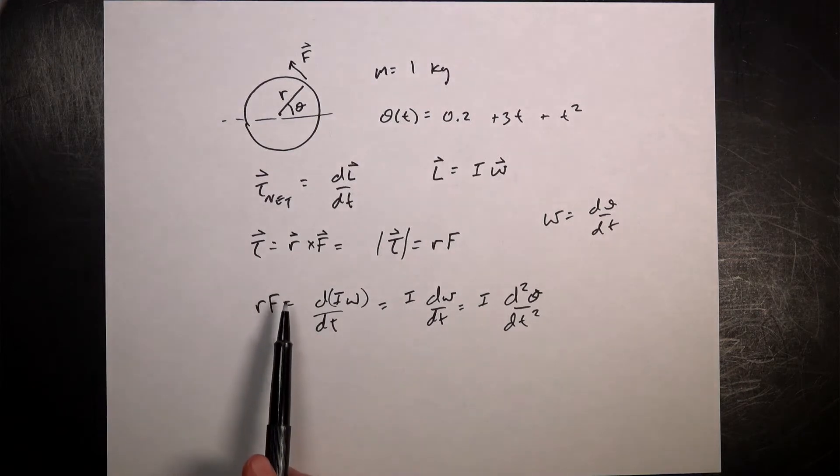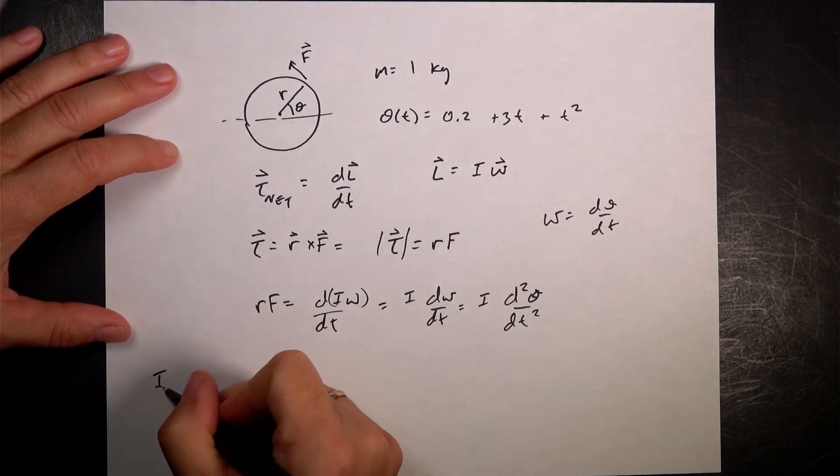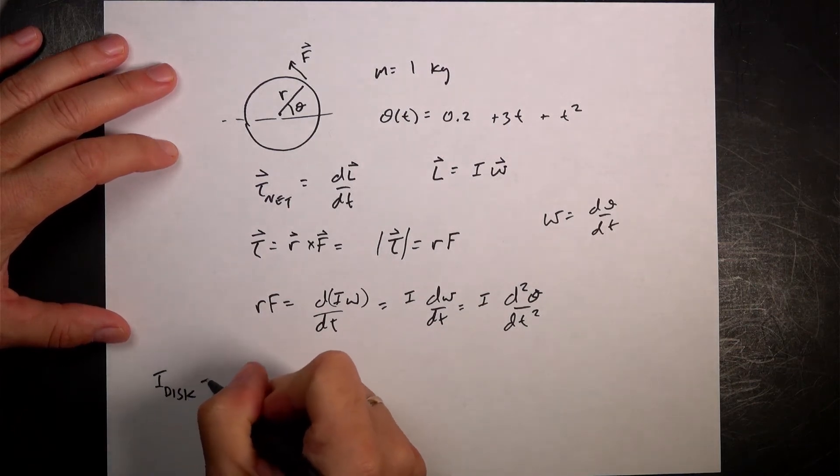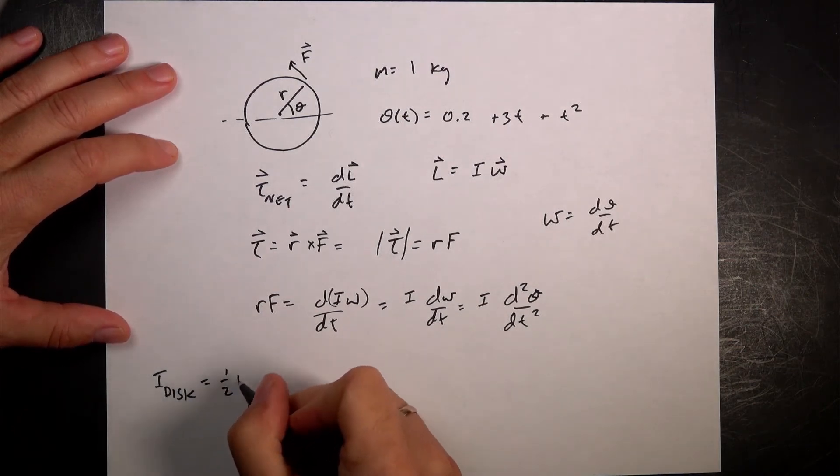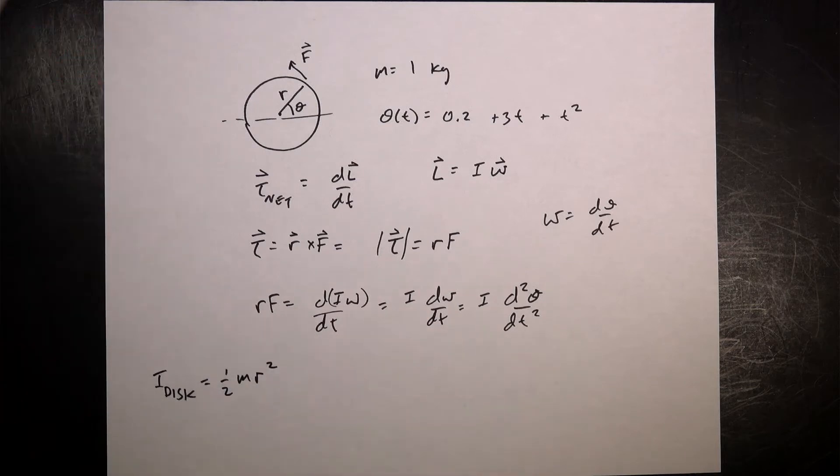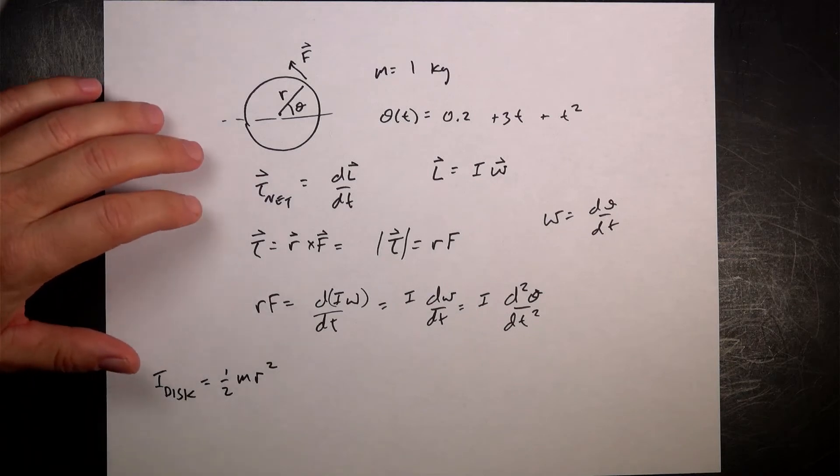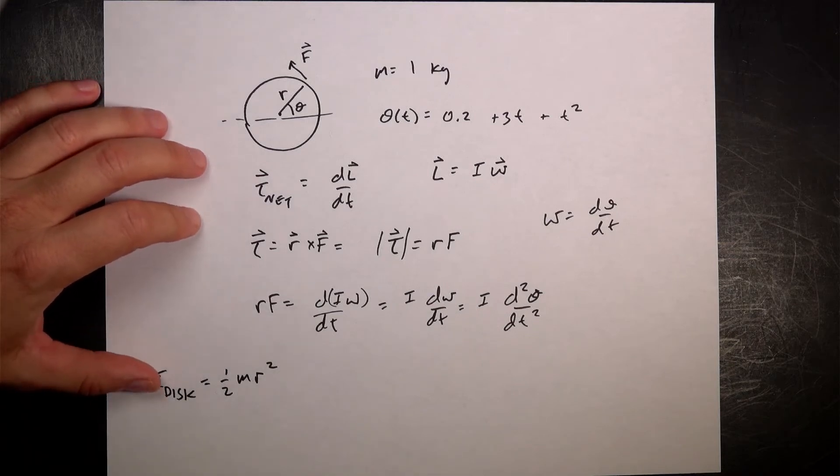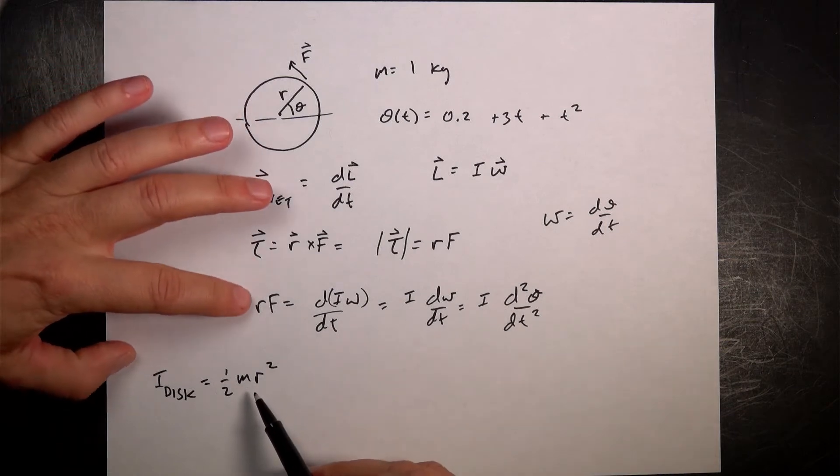Okay, so I know f. I know r. I can find i. i for a disk is one-half m r squared. I mean, you can derive that and actually have a derivation of that. Normally, you would look that up in the table. So I'm going to assume that's what you do. Just look that up in the table. So that has r in it.